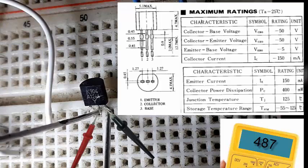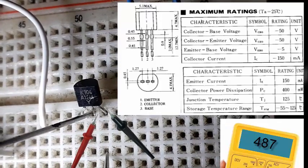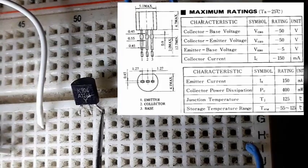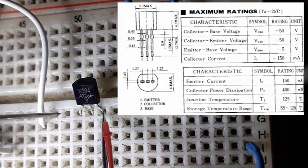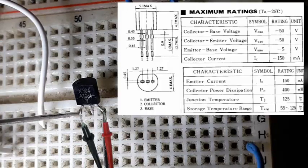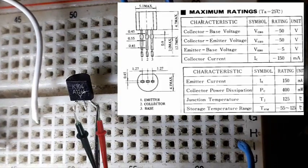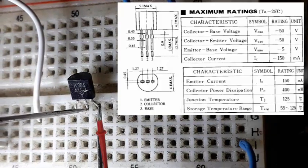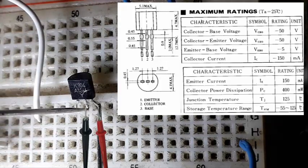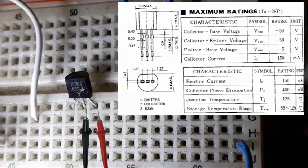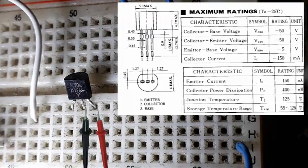Agora nós tiramos as duas pontas de prova. Colocamos a ponta vermelha aqui na base e a ponta preta aqui no emissor, e nada deve acontecer no multímetro. Se acontecer alguma coisa, tem problema. Tirando a ponta preta do emissor e colocando aqui no coletor, no pino 2, também não tem que acontecer nada. Se não aconteceu nada, está correto.